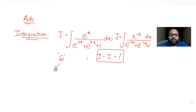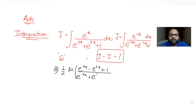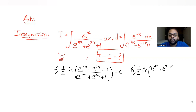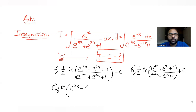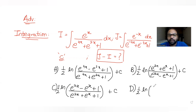There are four options given to us. The first option being: half log to the base e of (e raised to 4x minus e raised to 2x plus 1) upon (e raised to 4x plus e raised to 2x plus 1) plus C. Second option: half log to the base e of (e raised to 2x plus e raised to x plus 1) upon (e raised to 2x minus e raised to x plus 1) plus C. Third option: half log to the base e of (e raised to 2x minus e raised to x plus 1) upon (e raised to 2x plus e raised to x plus 1) plus C. And the last option: half log to the base e of (e raised to 4x plus e raised to 2x plus 1) upon (e raised to 4x minus e raised to 2x plus 1) plus C.